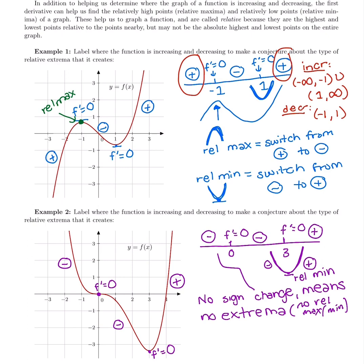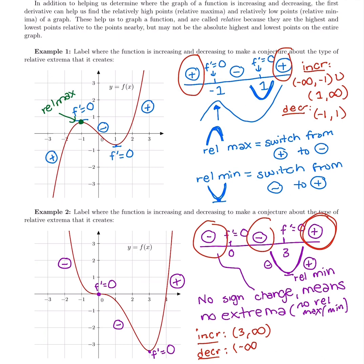For example two, we do the same thing in interval notation. Looking at the sign chart, the only place it's increasing is after three, so the increasing interval is three to infinity. The decreasing intervals are before zero and between zero and three: negative infinity to zero, union zero to three. Notice I don't go from negative infinity all the way to three, because at x equals zero the derivative is zero — it's a flat part — so we exclude that point, giving negative infinity to zero union zero to three.